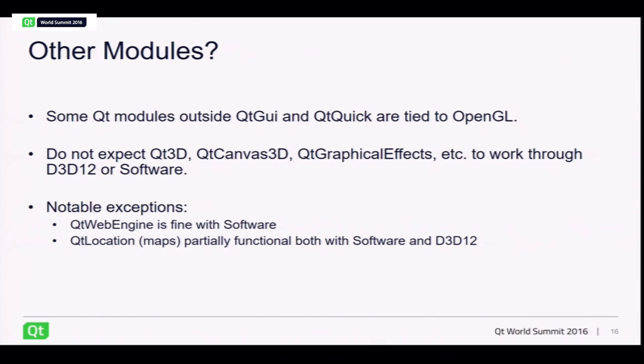For other modules in Qt — Qt3D, Canvas3D, and Qt Location which is a heavy scene graph user — not all modules will have multi-backend support. Qt3D and Canvas3D are tied to OpenGL for the time being. Most importantly, Qt WebEngine can work with the software backend, which is very important for embedded devices on the low end without a GPU but still needing WebEngine. Maps and mapping are partially functional on all backends but not perfect yet.